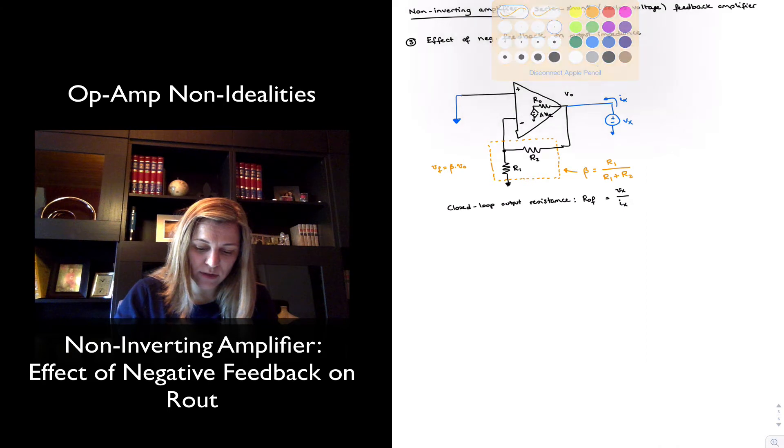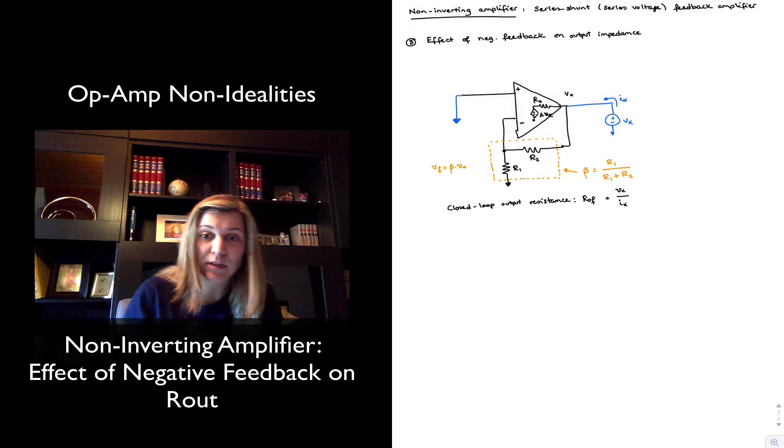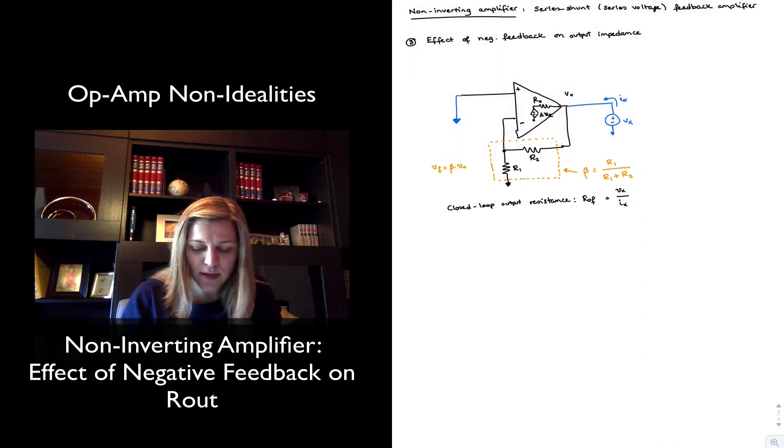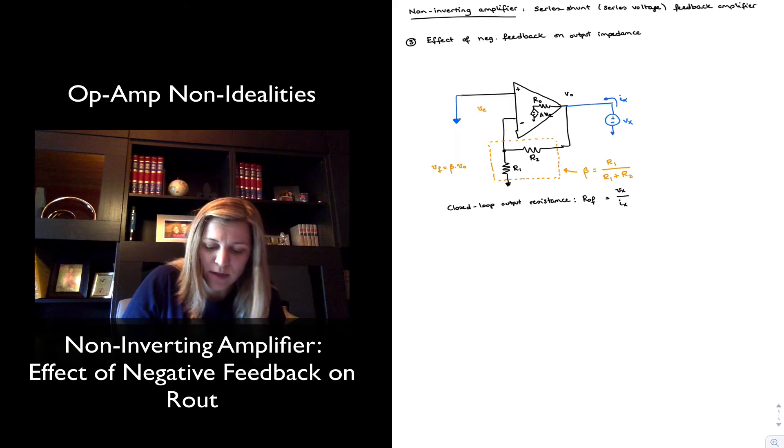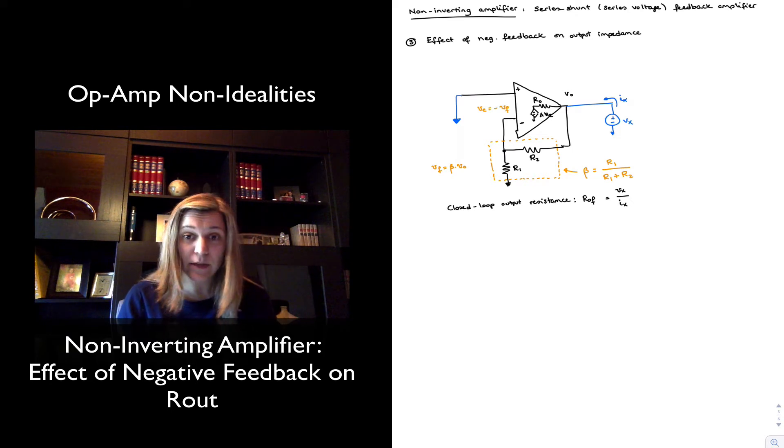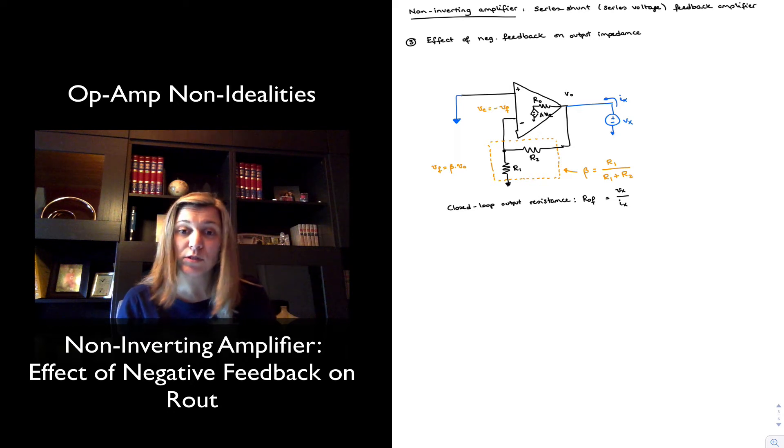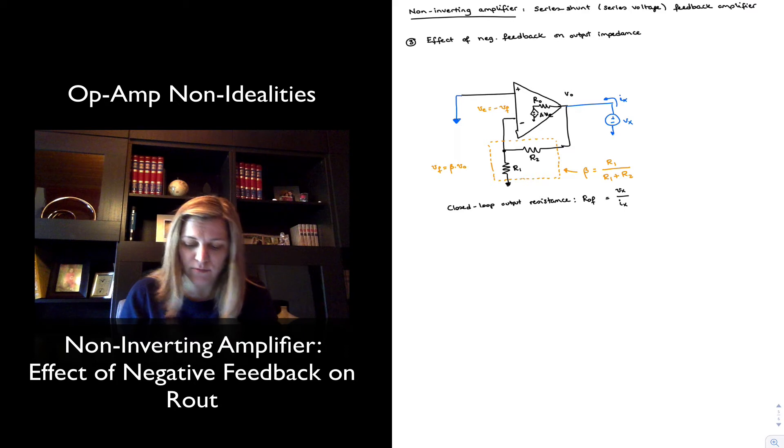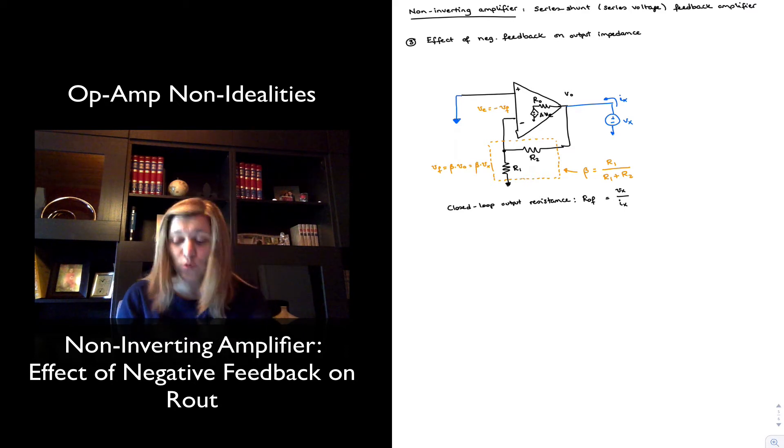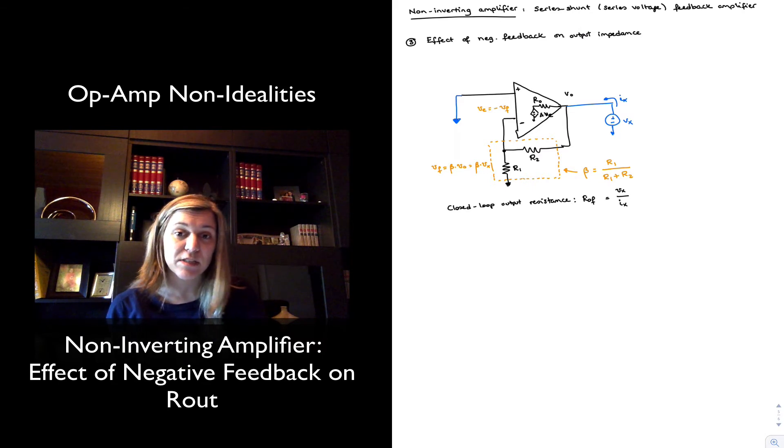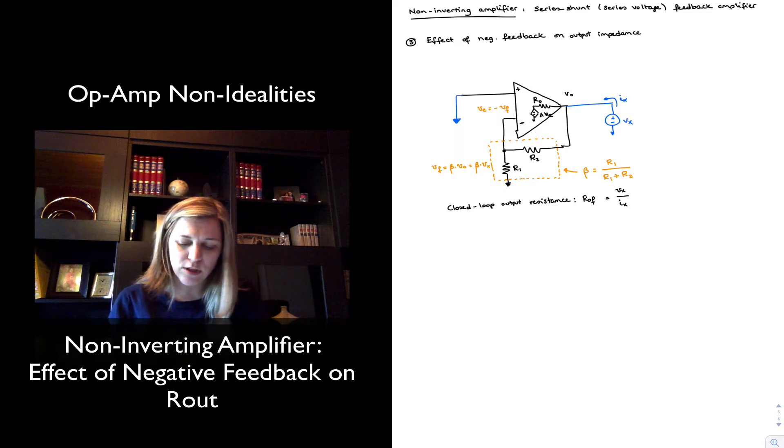Notice also a couple of particularities of this configuration. The error signal, given that my input signal is now equal to zero, is simply equal to minus my feedback signal. And my feedback signal is still beta times Vout. But notice that Vout is equal to Vx because of the Vx connection, so I can also express this as beta times Vx, which is going to come in handy since I want to express my equations in terms of Vx and Ix as much as possible, so that then I can calculate ROF.